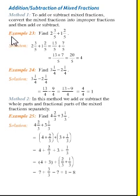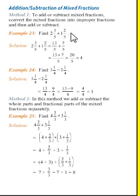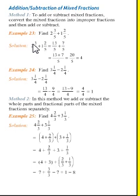See Example 23. The question is: find 2 whole 3 divided by 5 plus 1 whole 2 divided by 5. Our question is 2³/₅ + 1²/₅. So what we'll do here? First, we'll convert this mixed fraction into improper fractions. In the solution, 2³/₅ + 1²/₅ equals...